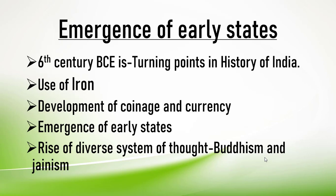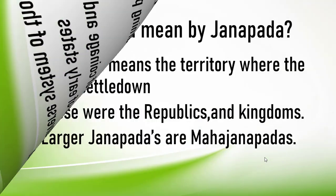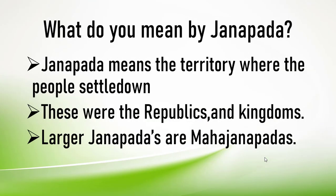Emergence of Early States — some important points. When writing answers you can add these points. 6th century BC is a turning point in the history of India. Us samay mein zyada iron use hua tha. Bahut type ki currency and knowledge ka bhi development hua tha, aur bahut type ke early states bhi emerge hue the. Most importantly, Buddhism and Jainism — two diverse systems of thought and religion — developed during this time, which we will study in Chapter 4 on Thinkers and Beliefs.